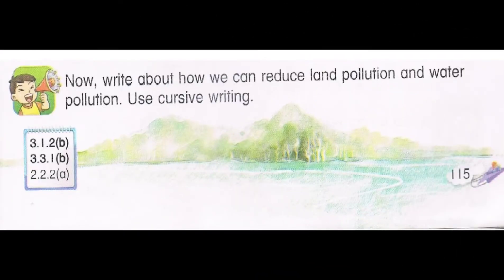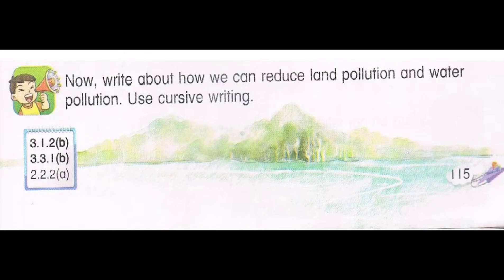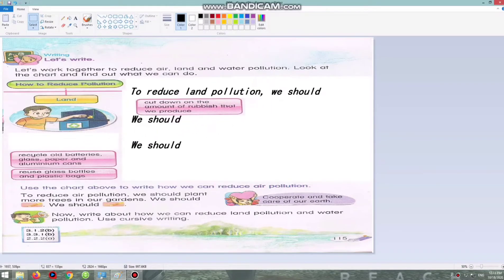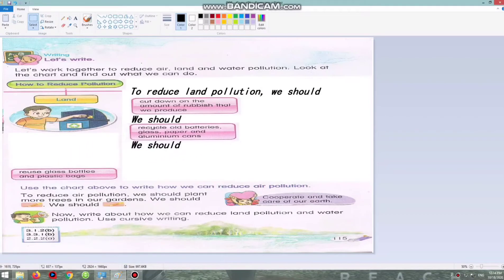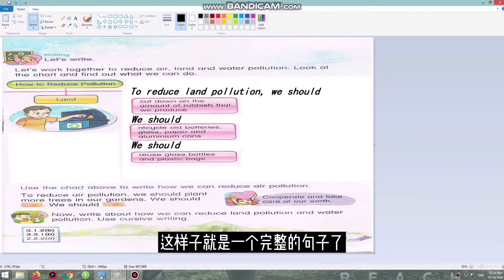Now let's write about how we can reduce land pollution. To reduce land pollution: we should cut down on the amount of rubbish that we produce. We should recycle old batteries, glass, paper, and aluminum cans. We should reuse glass bottles and plastic bags. That's a complete sentence.